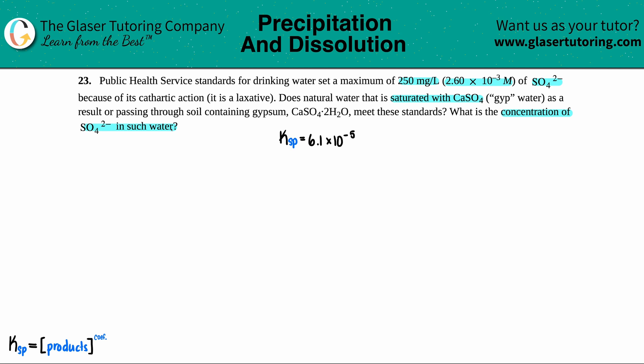So basically, we just have to find out what is the molarity of that sulfate in the water, in that gyp water. And will it cause people to have explosive diarrhea? Sorry for that little thing, but that's basically what's happening here, right?